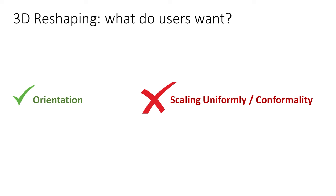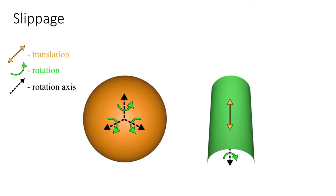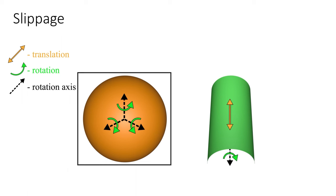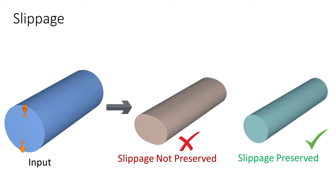Instead, users seek outputs that preserve slippage and preserve the original scale of the different input model elements as much as possible. A surface is locally slippable if it is locally invariant under translational or rotational motion. For instance, spheres are invariant under rotation around any axis, and cylinders are translationally slippable along their axis and rotationally slippable around it.